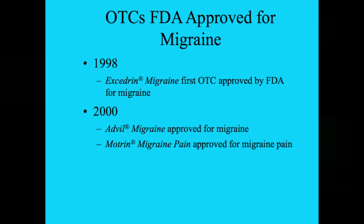The clinical trial requirements for the over-the-counter products were a little different from those used for migraine-specific drugs. They required that patients not be frequently disabled, and that nausea and vomiting occur with headaches no more than 25% of the time — so they selected for a milder set of migraine patients. These medications work well, but as we all know, if overused they can lead to medication overuse headache. We have to guard against patients taking these medications more than a couple of days per week.